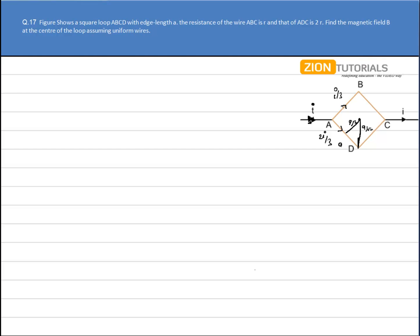So I have a current I by 3 flowing from A to B and then to C. First of all, calculating the magnetic field due to ABC, that will be obviously inside. That can be calculated by Biot-Savart law. The magnetic field due to AB is given by formula mu naught i by 4 pi P times sin phi 1 plus sin phi 2.